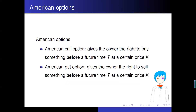In contrast to European options, we also have American options. The difference is that the American call option gives the owner the right to buy something before a future time T — the holder can buy something at any time before T — and the holder of the put option can sell the underlying asset at any time before time T.